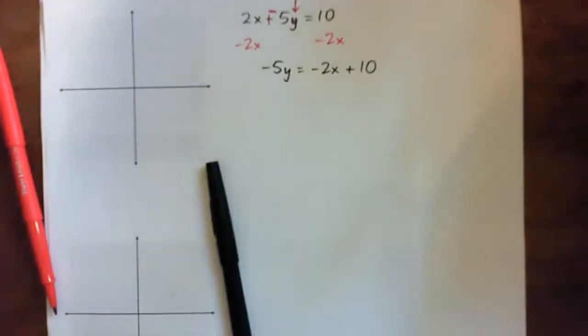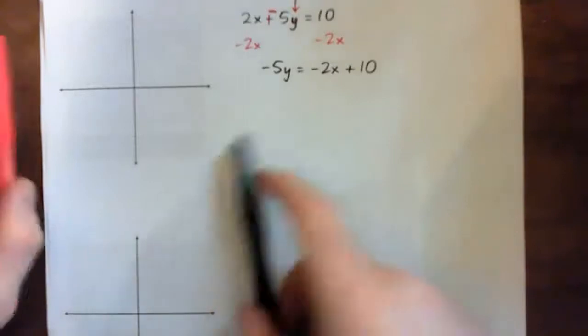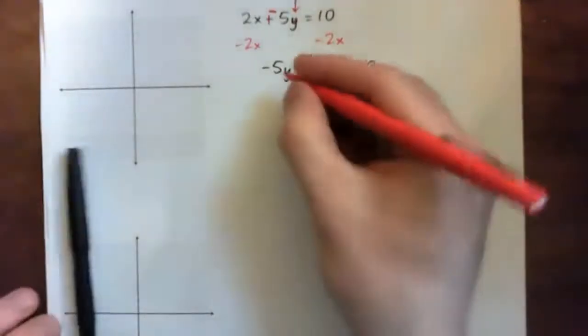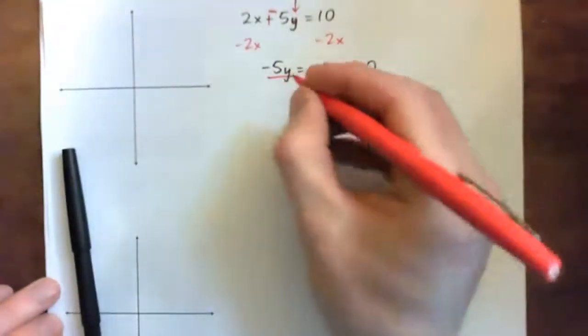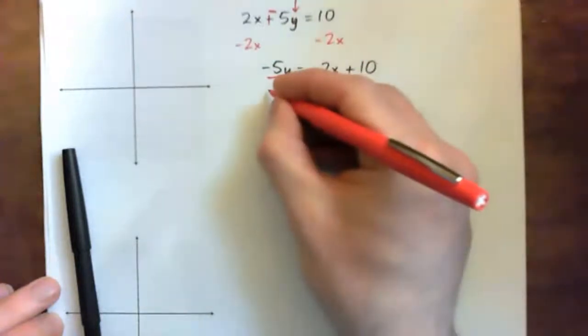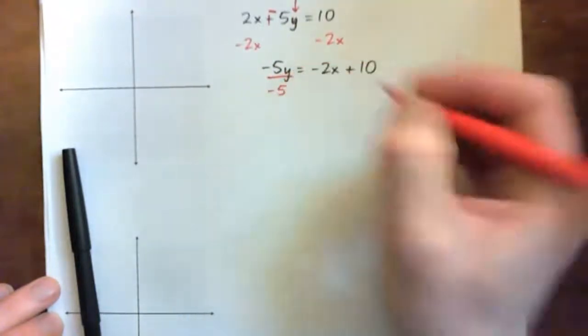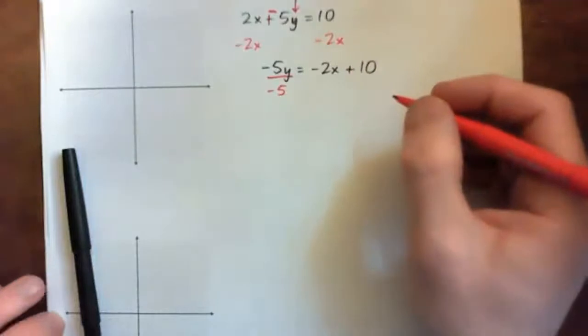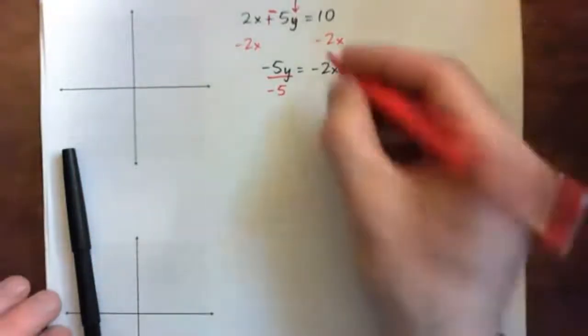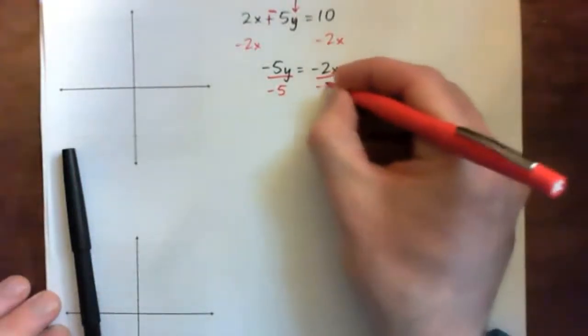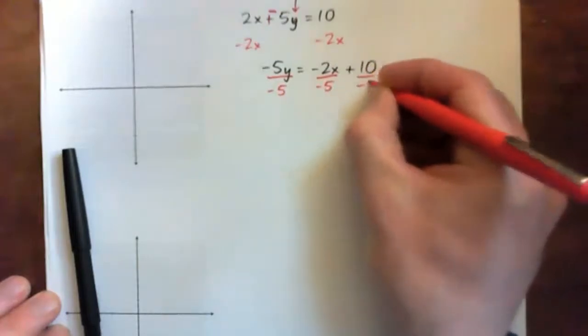Now, is that step alright? Yes. Alright. So, y is being multiplied by negative 5. To get it on its own, I need to divide by negative 5, yeah. And if I divide that guy by negative 5, I need to divide everything by negative 5.